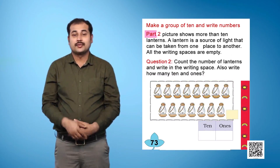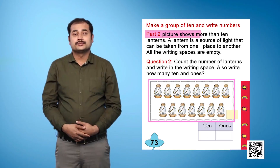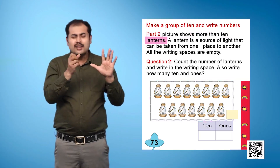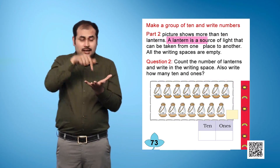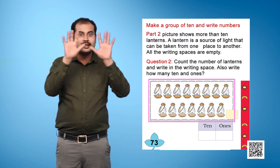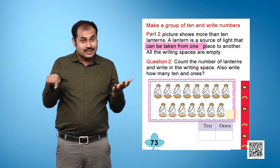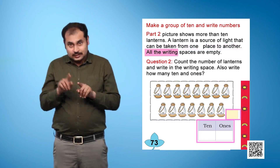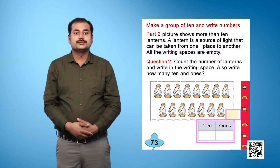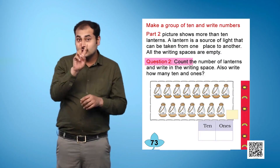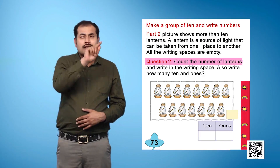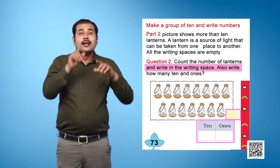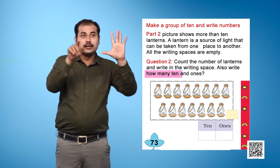In Part 2 picture, there are more than 10 lanterns. A lantern is a source of light that can be taken from one place to another. All the writing spaces are empty. Question 2: Count the number of lanterns and write in the writing space. Also write how many 10s and ones.